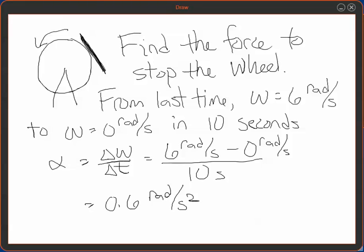Now, the next thing we need, though, is we know that the torque that you apply to something to get it to stop spinning or start spinning is I alpha. So now we know that alpha is 0.6 radians per second squared.